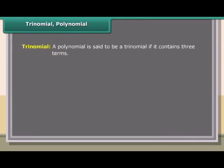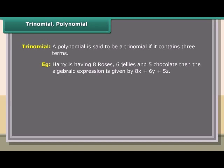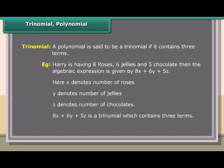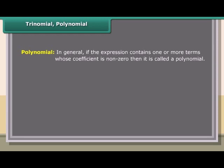Trinomial: a polynomial is said to be a trinomial if it contains three terms. Example: Harry is having eight roses, six jellies, and five chocolates. The algebraic expression is 8x plus 6y plus 5z, where x denotes roses, y denotes jellies, and z denotes chocolates. 8x plus 6y plus 5z is a trinomial containing three terms. In general, if an expression contains one or more terms whose coefficient is non-zero, it is called a polynomial — example: 4x plus 4xy plus 17xz² minus 10y²z plus 19.